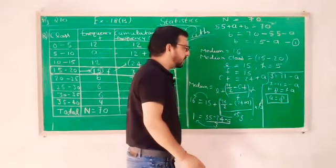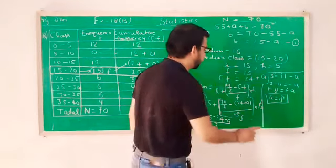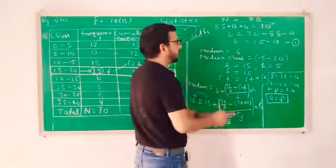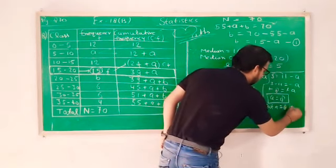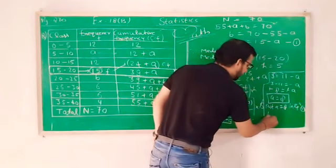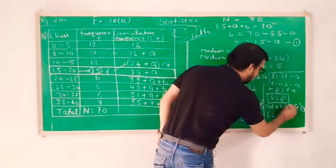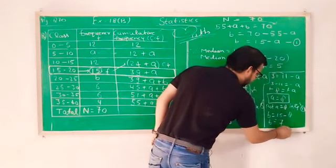A value is 8. So that's why we will use the value in this. We put a value in equation 1. Put a equal to 8 in equation 1. So b equal to 15 minus 8. So b equal to 7.